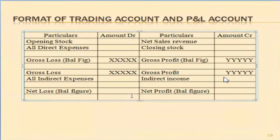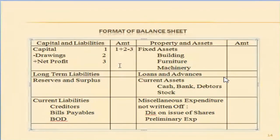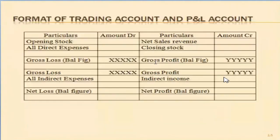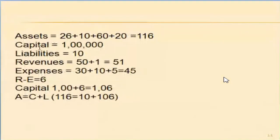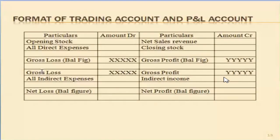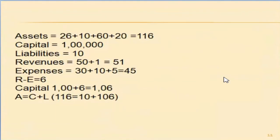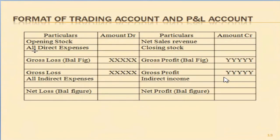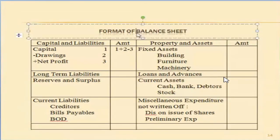Once the profit and loss account is done, we move to the next statement. Having dealt with expenses and revenue, we are left with assets, capital, and liabilities — these three are entered in the balance sheet. On the right side, write all assets; on the left side, write all capital and liabilities. Law has prescribed a specific format for these, which we will see on a particular day.